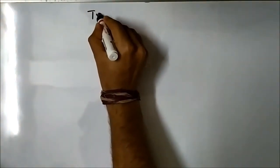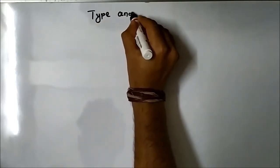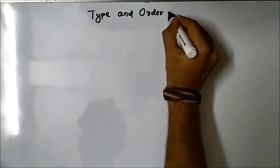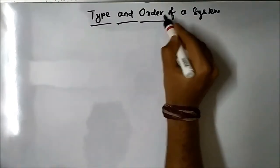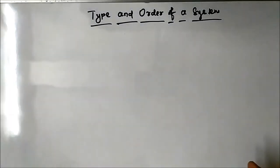Hello friends, welcome to Engineering Tutorial. In the previous video on control systems we discussed the concept of poles and zeros and drawing the pole-zero plot. In this video we are going to discuss some related concepts. Today's topic is about the type and order of a system, which will be determined from the open-loop transfer function and the closed-loop transfer function.